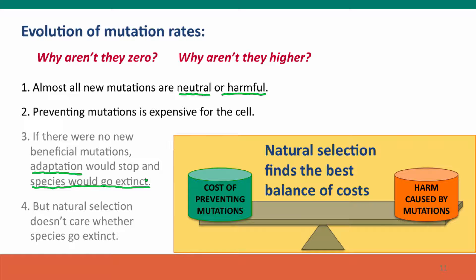But the factors that natural selection considers are the cost of preventing mutations and the harm that the mutations do. If there was no harm, the cell wouldn't bother preventing mutations at all. If the harm is really high, it's worth investing more resources in preventing mutations. These are the factors that determine what mutation rates natural selection has left us with — not beneficial mutations causing adaptation or saving species from extinction. These factors play very little, if any, role in determining mutation rates.